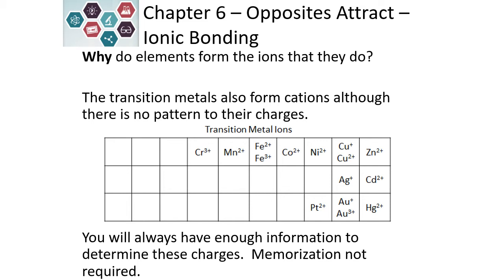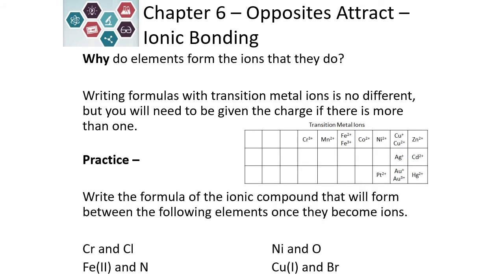When we talk about transition metals, transition metals also form cations because they are metals, but the pattern is not quite as simple as with the columns they fall in. Some of them form multiple charges, so we do have to have a little more information to figure out the charges — you do not have to memorize these. Let's practice writing the ionic formulas for compounds containing transition metals. You can use the table provided or the Roman numerals in parentheses that follow the elements to tell you the charge.